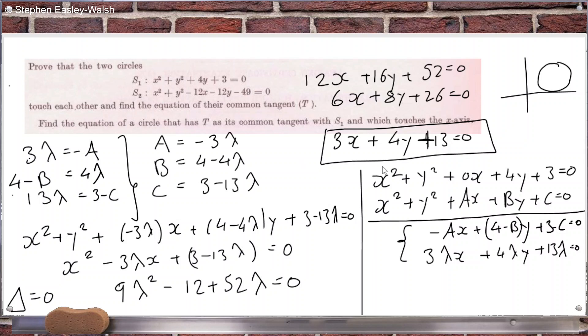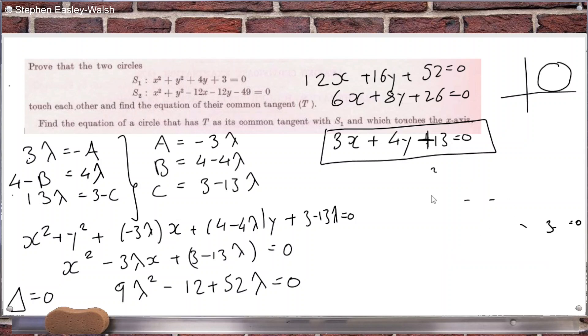So I'm running out of space. This is getting quite long. Let's remove this. I can divide by 3. I get 3 lambda squared. Oh, no. I can't divide by 3. So I have 9 lambda squared plus 52 lambda minus 12 equals 0. Can I factorize it?